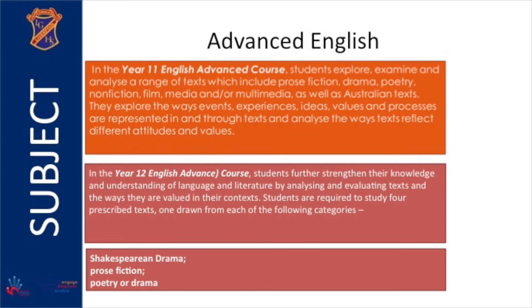In Year 12, students further strengthen their knowledge and understanding of language and literature by analysing and evaluating texts and the ways they are valued in their contexts. Students are required to study four prescribed texts, one drawn from each of the following categories: Shakespearean drama, prose fiction, and poetry or drama. Please speak to your class teacher or to myself, Mrs Minos, if you have any questions or would like more information.